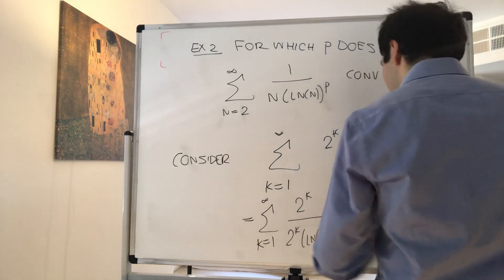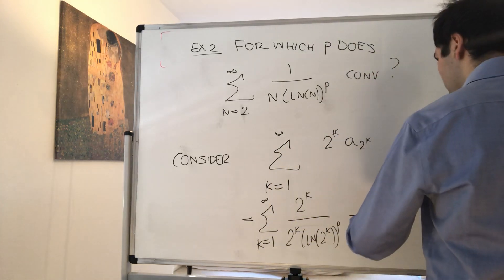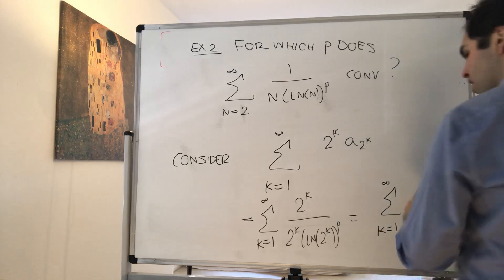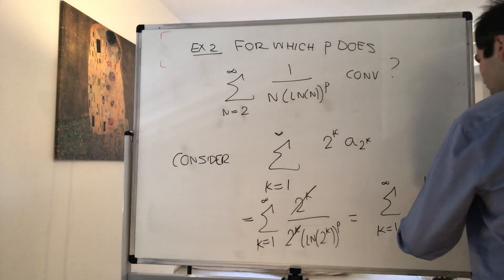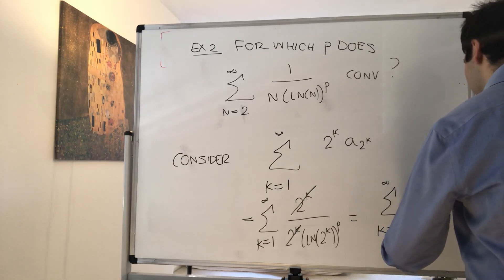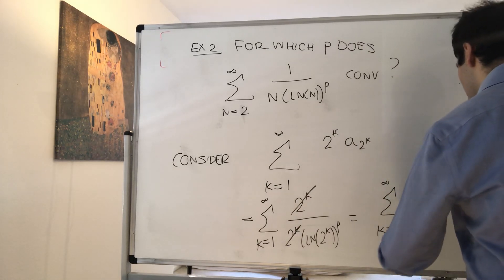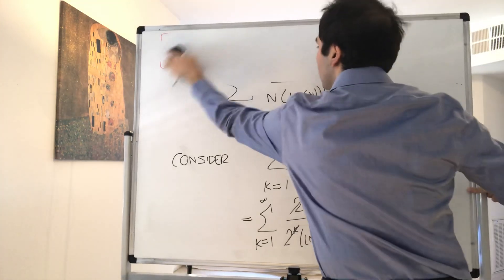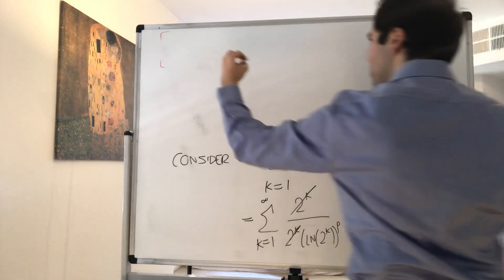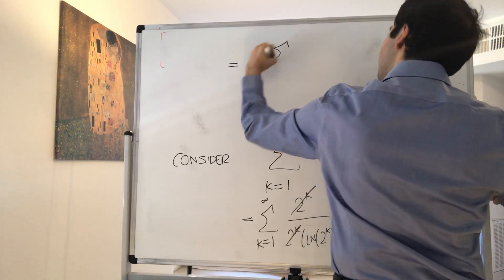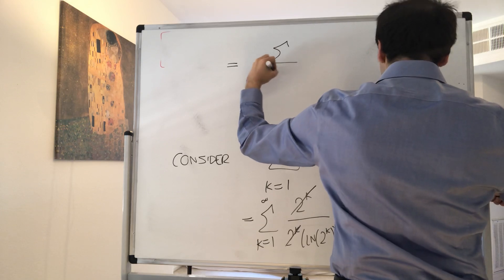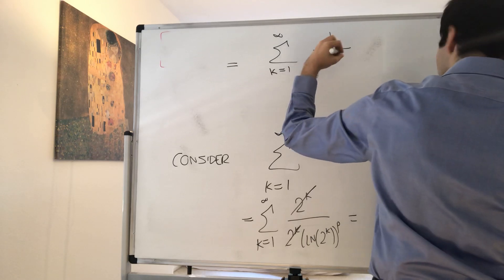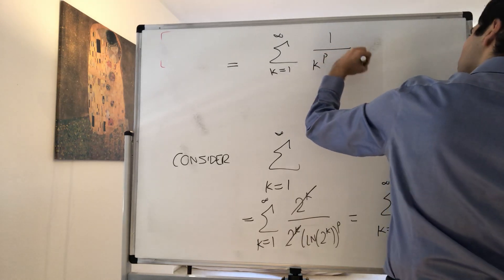And that just becomes 1, so sum from k from 1 to infinity of, this cancels out, and we get 1 over (k ln 2)^p. But then this simplifies, that becomes the sum from k equals 1 to infinity of 1 over (k^p times ln(2)^p).